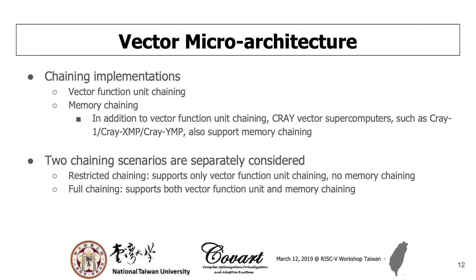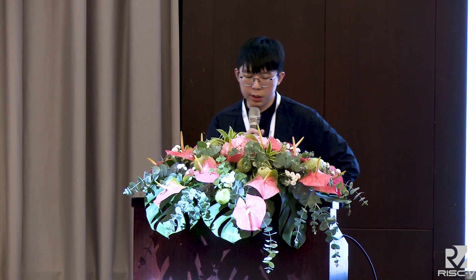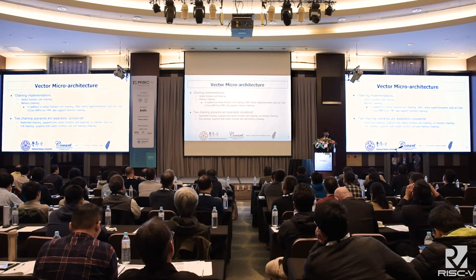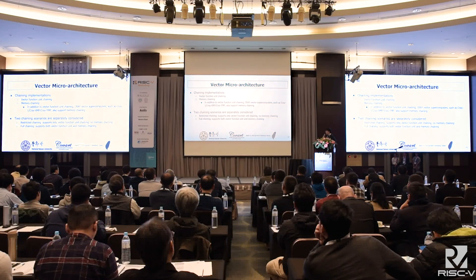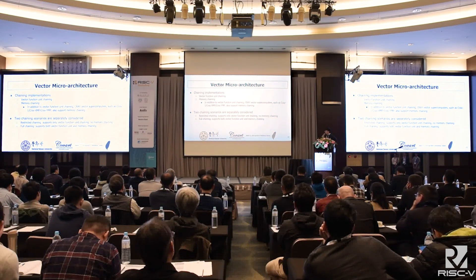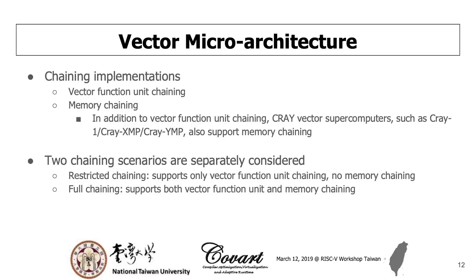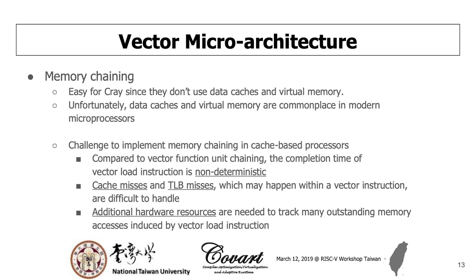We classify chaining into two implementations. The first is vector function unit chaining, which we just talked about. The second is memory chaining. In addition to vector function unit chaining, Cray vector supercomputers such as the Cray-1, Cray-XMP, and Cray-YMP support memory chaining. So with two chaining implementations, we consider two chaining scenarios in our simulation: restricted chaining, which only supports vector function unit chaining, and full chaining, which supports both vector function unit chaining and memory chaining.